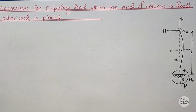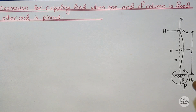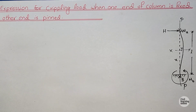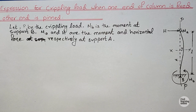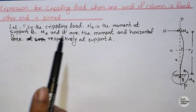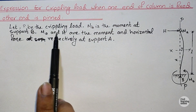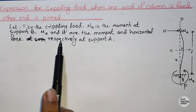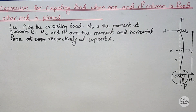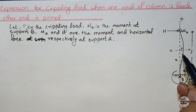For deriving the expression for the crippling load, let us first write a short description of this diagram. P is the crippling load, MB is the moment at support B, and MA and H are the moment and the horizontal force respectively at support A.